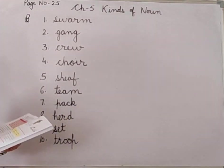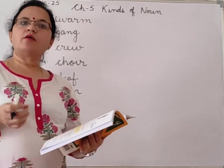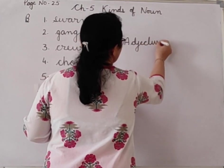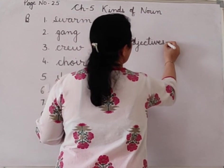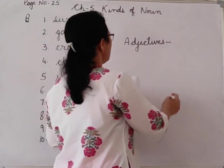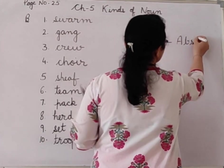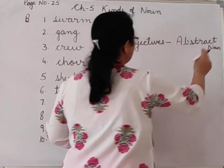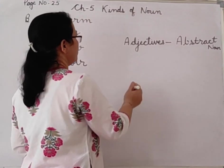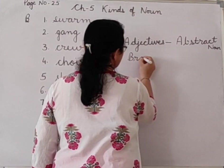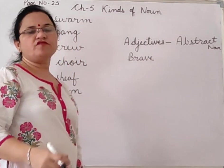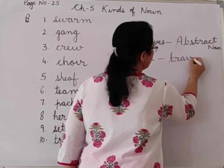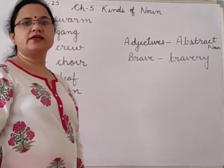Abstract nouns can also be formed with the help of adjectives. Here are some examples. Adjective: brave — 'He is a brave boy.' Brave is an adjective. We can form the abstract noun bravery from brave — 'He was awarded for his bravery.' So here bravery is the abstract noun.